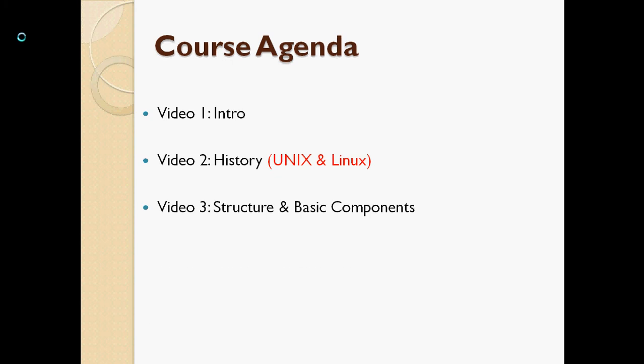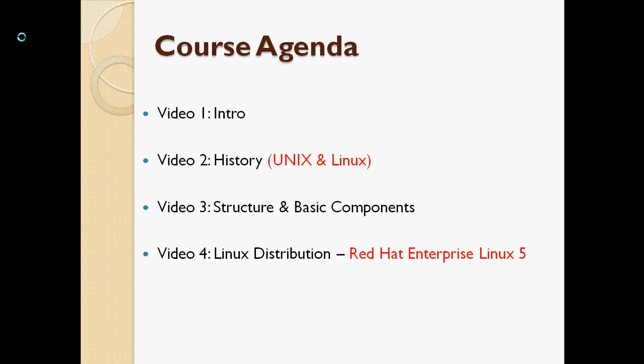In video three, we will talk about structure and components. There are certain properties that every Linux distribution shares — concepts like kernel, shell, commands and utilities, and the organization of files and directories. In video four, we will talk about Linux distributions. Distribution is a big term — there are over 250 distributions or types of Linux operating systems, and if you want, you can come up with your own.